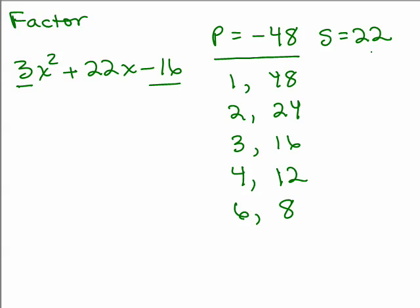Since the sum is positive, positive goes in front of the larger number, and the product is negative, so these must be opposite signs to get a negative 48, so the other number must be negative. So we want to look at those combinations and see if any add up to the sum of 22, and here it is.